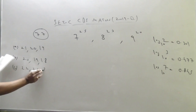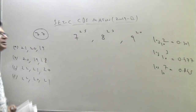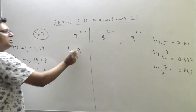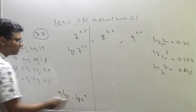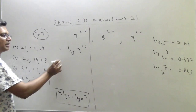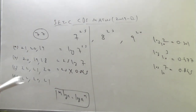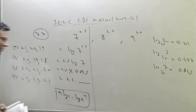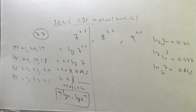For 7²⁵: log₁₀(7²⁵) = 25 × 0.845 ≈ 21.something. The rule: whatever value you get on the left of the decimal, add 1 to it. So the number of digits = 22. Looking at the options, two can be eliminated immediately. For 8²³: log₁₀(8²³) = log₁₀(2³)²³ = 69 × log₁₀2 = 69 × 0.301 ≈ 20.something, giving 21 digits. Since we already have 22 and 21, we can directly take option C without calculating 9²⁰.